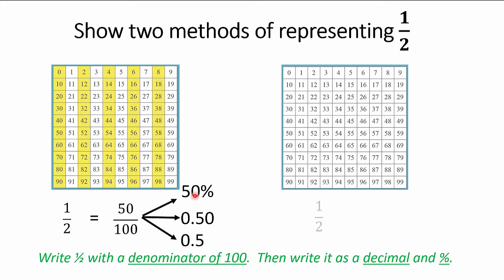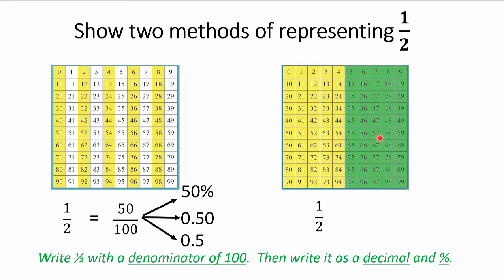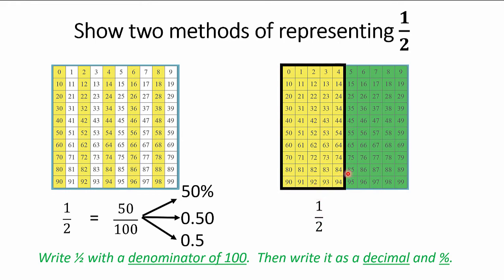Method two for one-half: take the entire grid and split it into two equal parts, then choose one. There you go — one piece colored. That's one-half. Count the little ones: 50 out of 100. Same result.